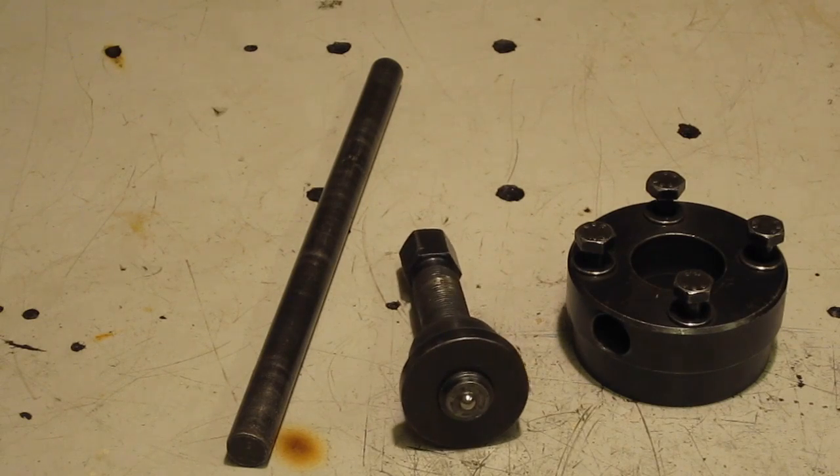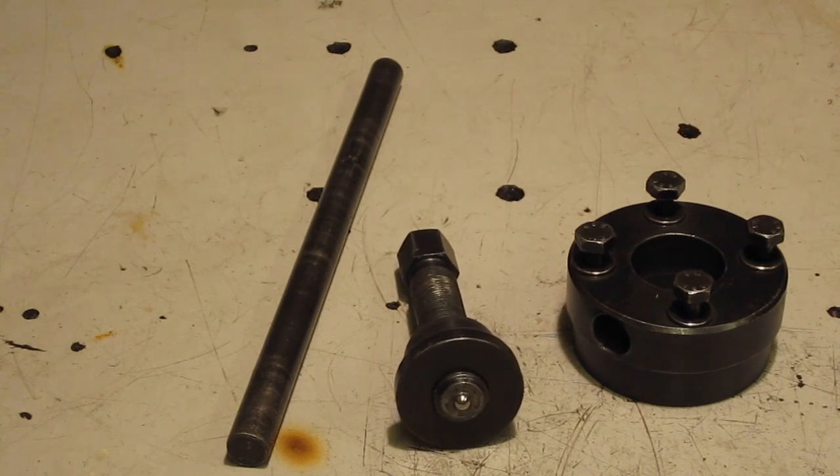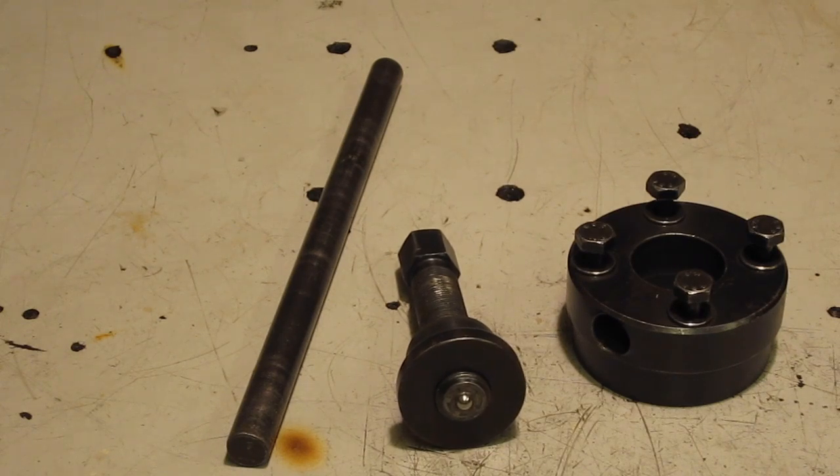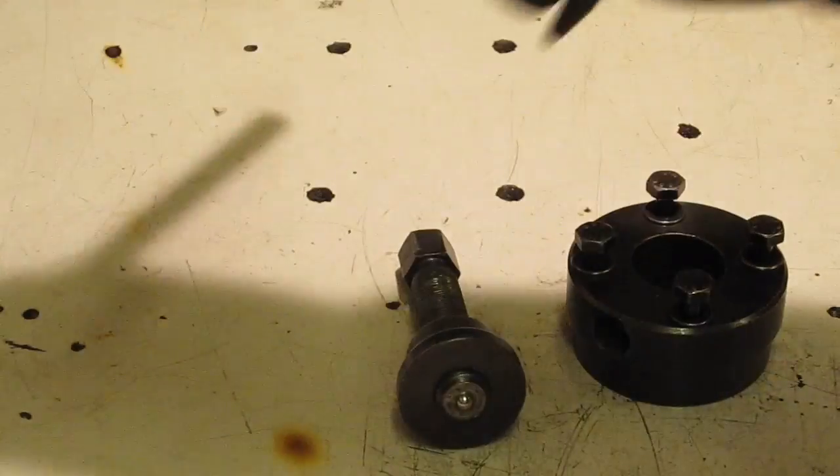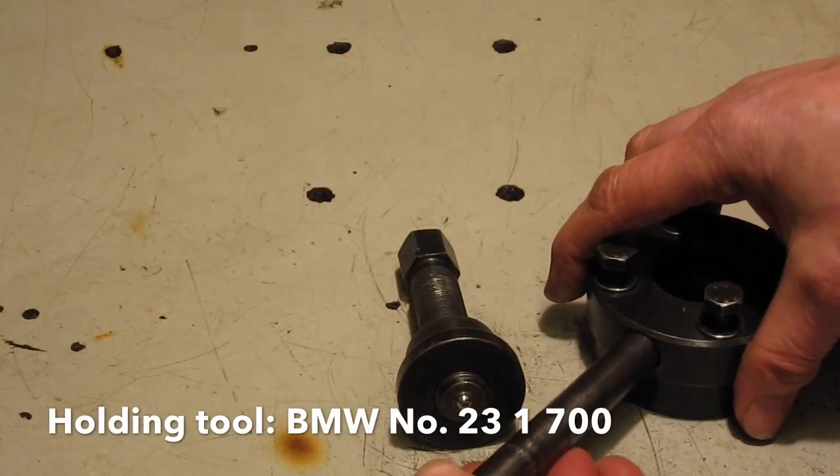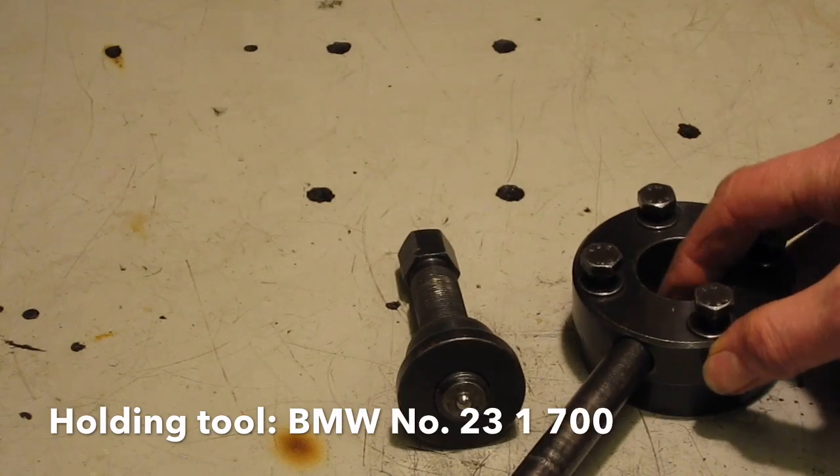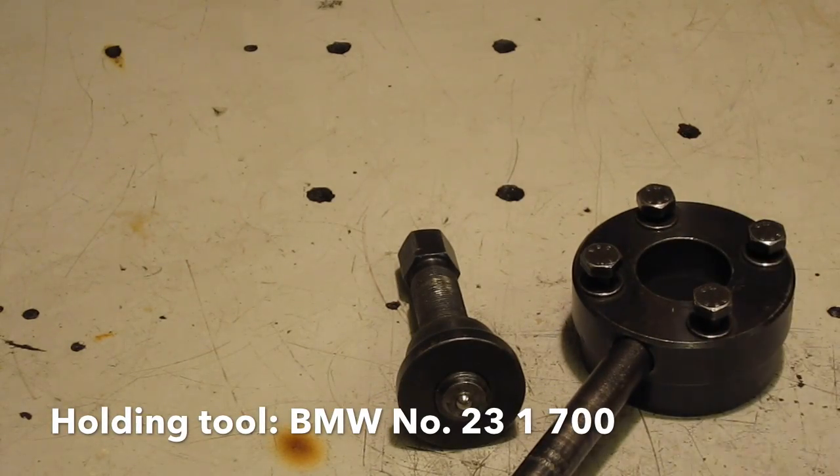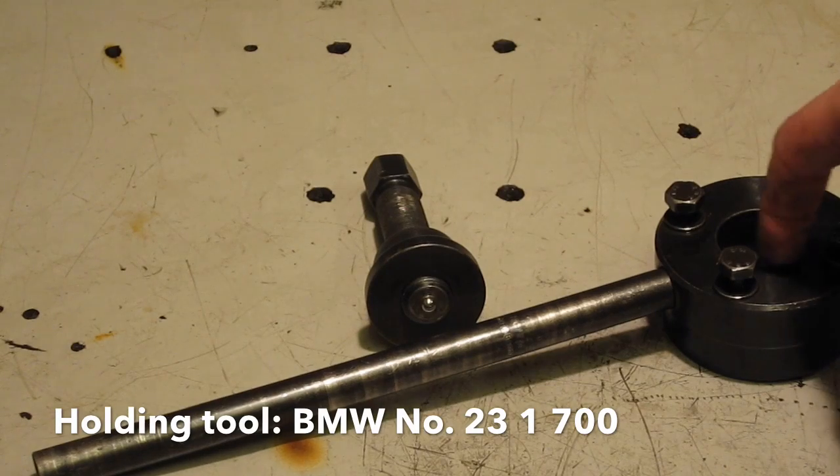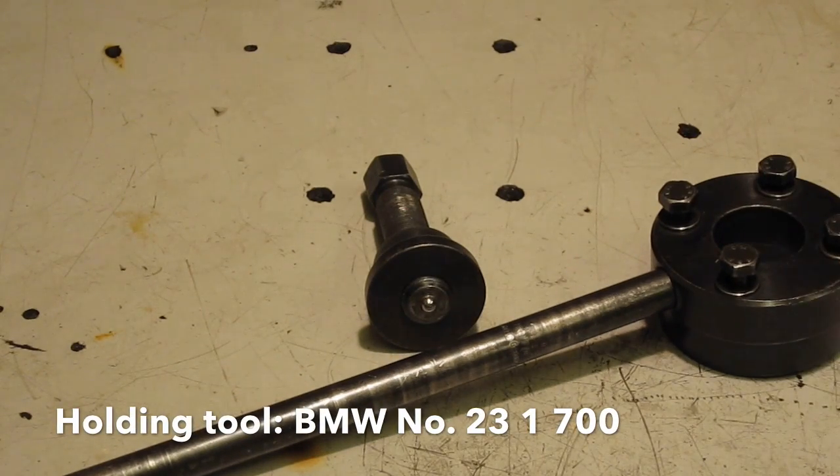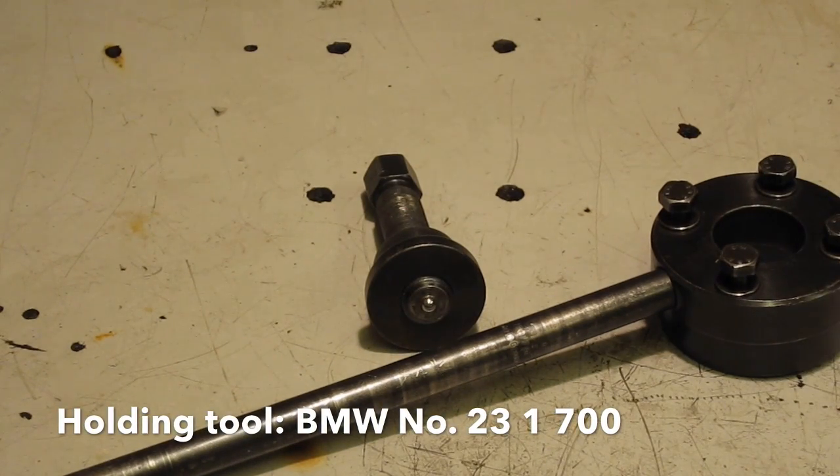The nut is done up to considerable torque, so you'll need a good means of holding the gearbox output shaft flange while you undo it. That's the purpose of this tommy bar that fits into the tool. You hold the tommy bar while you put a socket down the center and undo the nut.